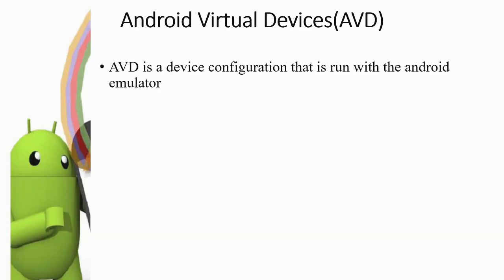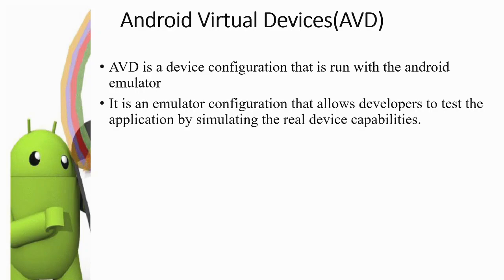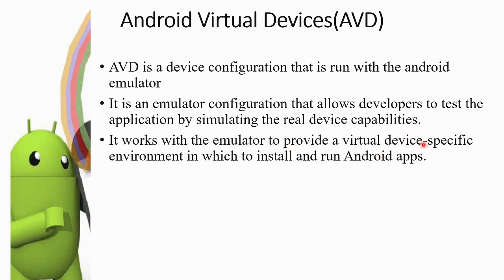An Android Virtual Device is a device configuration that runs with the Android Emulator. This is an emulator configuration that allows developers to test the application by simulating the real device capabilities. It works with the emulator to provide a virtual device-specific environment in which to install and run Android apps.